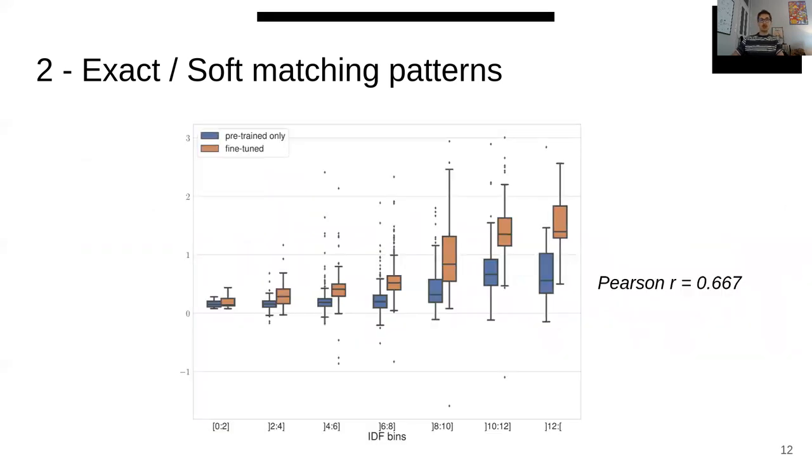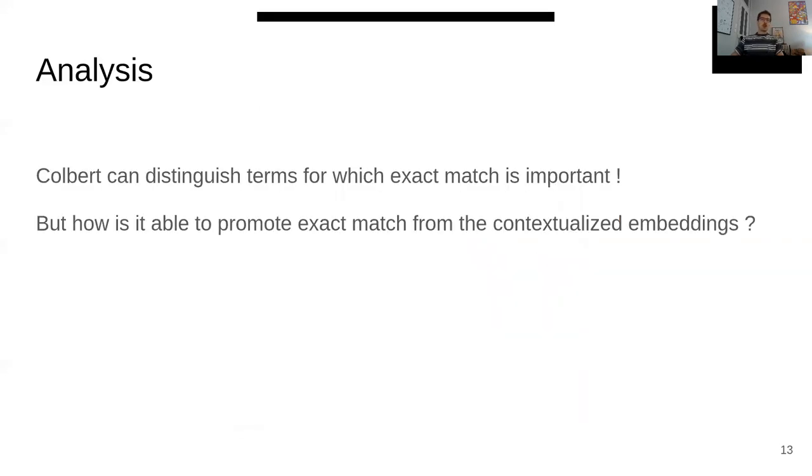We plotted this measure against IDF, and we can again observe a moderate positive correlation. It tells us roughly that terms with high IDF, so important terms, they tend to rely more on exact match. And the effect is already observable before fine-tuning, but is reinforced when the model is trained on relevant data.